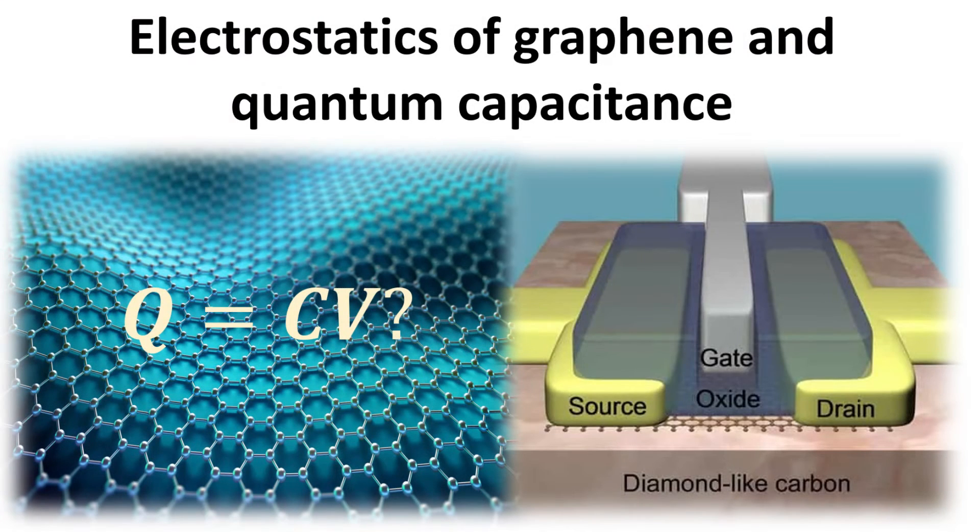The carrier densities in graphene can be tuned through the field effect, in a metal, oxide, graphene device structure as shown.